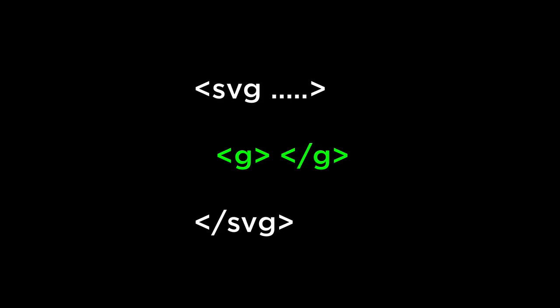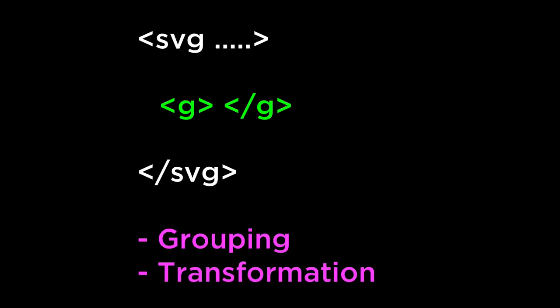The SVG group element is used to group SVG elements together. You can think of the SVG group as a container. The G tag is the SVG group element. Anything inside of the G tag is considered to be inside, or part of, the G container. There are two main reasons to use the SVG group element. One: grouping a set of SVG elements with the same attributes.